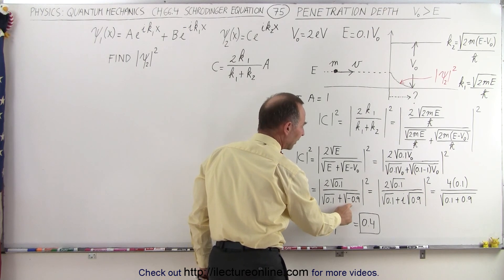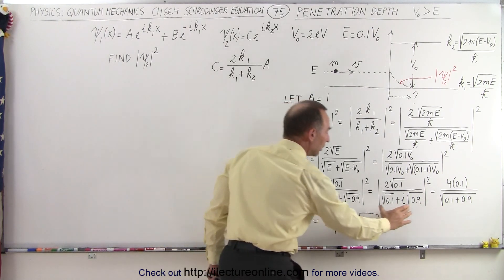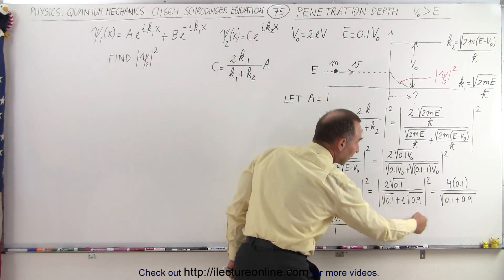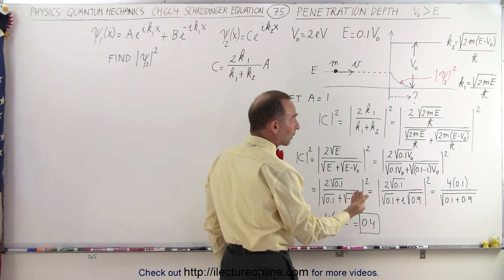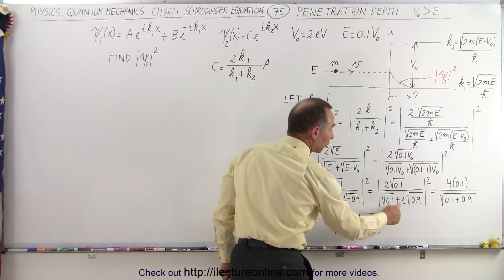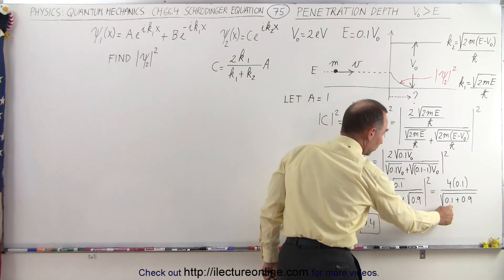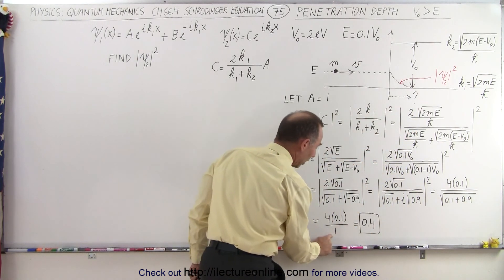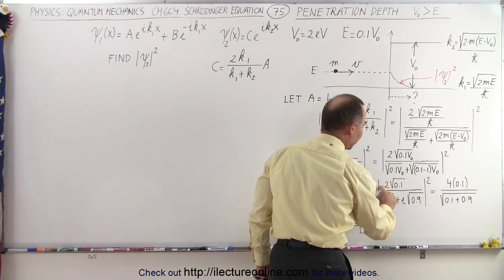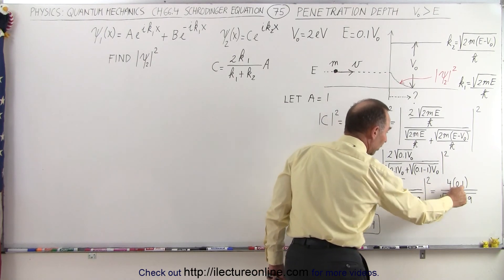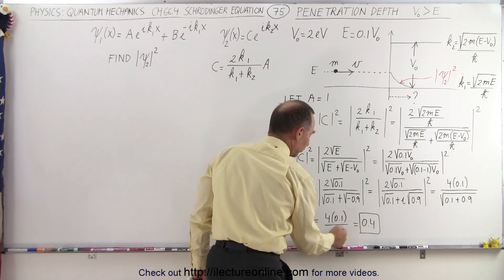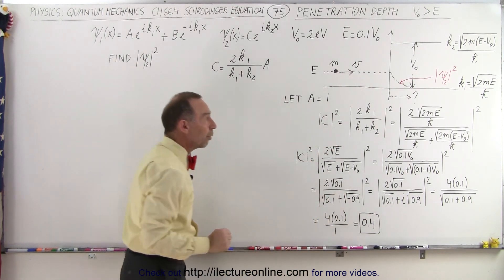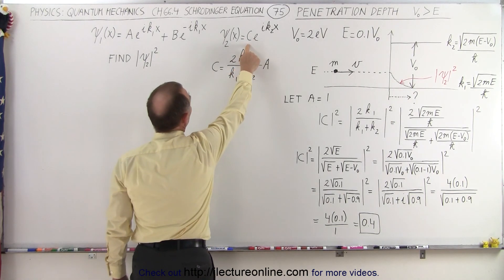Because we have the square root of a negative number, we turn that into a complex number. When we take the magnitude of that complex number, the magnitude is the square root of the sum of the squares of the components. We square each component, add them together, and take the square root, which gives us 1. Squaring the numerator gives 4 times 0.1, which is 0.4, divided by 1. So the magnitude of C squared is equal to 0.4, which now goes into our equation.